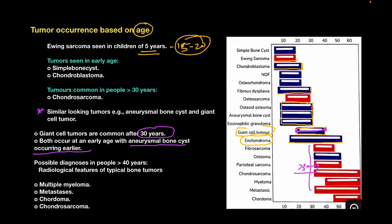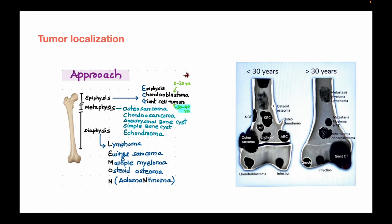Now let's talk about tumor localization. The bone is divided into three parts: epiphysis, metaphysis, and diaphysis. For epiphysis, the mnemonic is ECG: Epiphysis — Chondroblastoma and Giant cell tumor are seen in the epiphysis. Chondroblastoma is seen from birth to 20 years while giant cell tumor is seen between 25 to 40 years. In metaphysis, five important tumors can be seen: osteosarcoma, chondrosarcoma, aneurysmal bone cyst, simple bone cyst, and enchondromas. In diaphysis, the mnemonic is LEMON: L for lymphoma, E for Ewing sarcoma, M for multiple myeloma, O for osteoid osteoma, and N for adamantinoma.